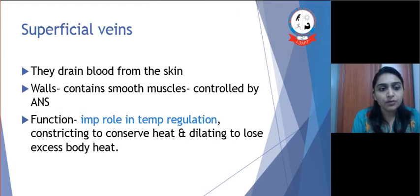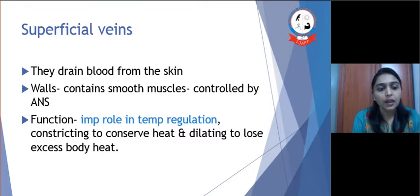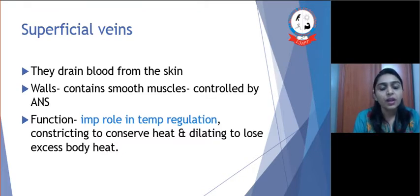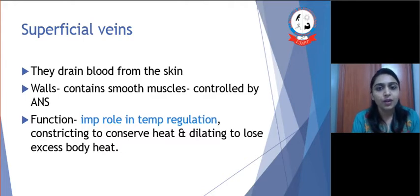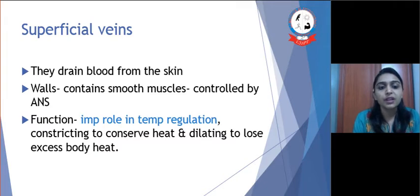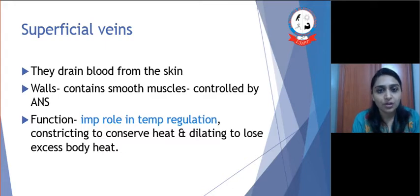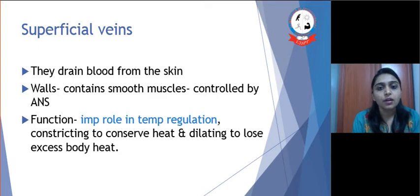These superficial veins mainly drain blood from the skin. The wall of the superficial vein contains smooth muscle and they are controlled by the ANS, i.e. autonomic nervous system. Thus it plays a very important role in temperature regulation. Though the function of the superficial vein is temperature regulation, it constricts the vein to conserve heat and dilates to lose excess body heat.